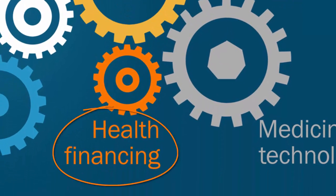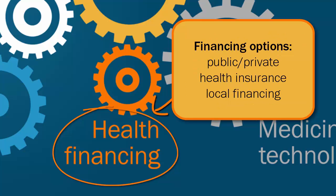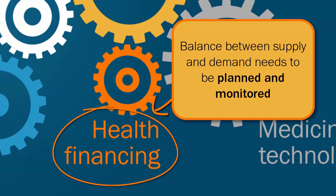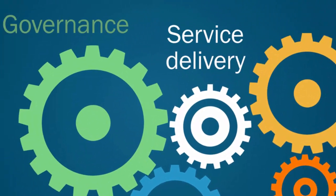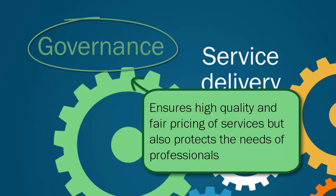Health financing is an important component of the universal eye health approach. Affordability or subsidy options should be considered to ensure equity, as well as income-generating mechanisms for sustainability. There are many financing options for different settings, including public-private partnerships, health insurance schemes and local financing options. The balance between supply and demand needs to be planned and monitored. Active leadership and governance ensures high quality and fair pricing of services, while also protecting the needs of professionals through ethics and standards.